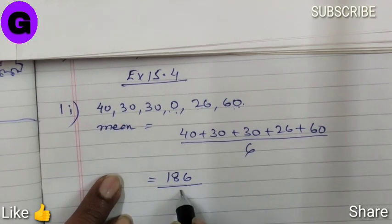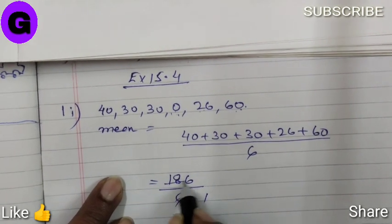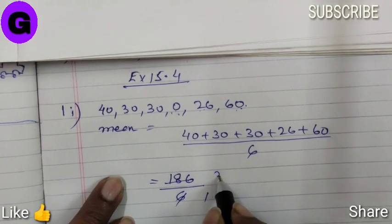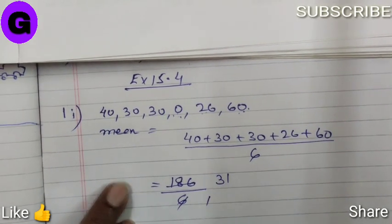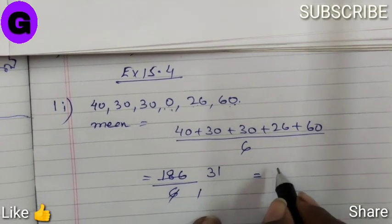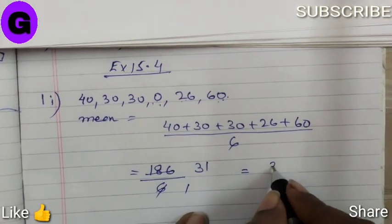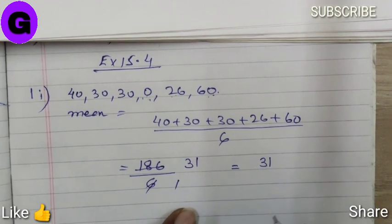186 divided by 6. 6 ones are 6, 6 threes are 18. So the mean of this data is 31.